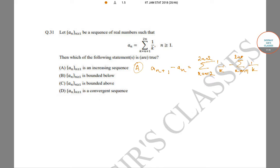In the first sum there are two extra terms: 1/(2n+1) and 1/(2n+2). In the second sum there is one extra term which is 1/(n+1). So this becomes 1/(2n+1) plus 1/(2n+2) minus 1/(n+1).